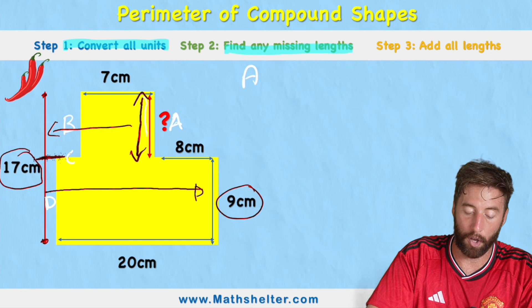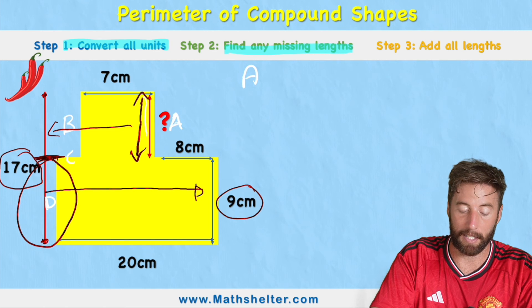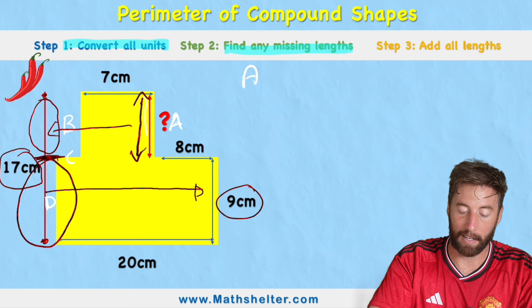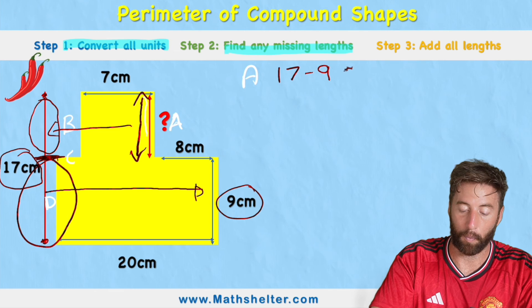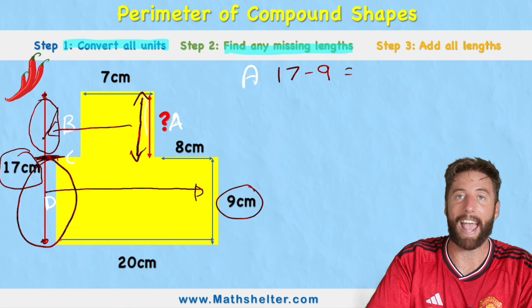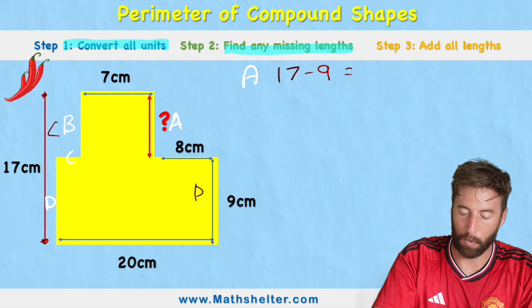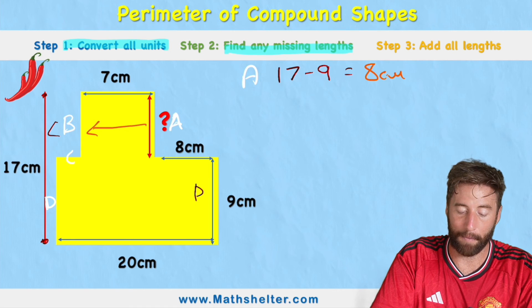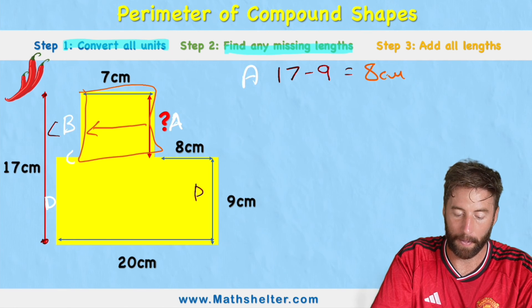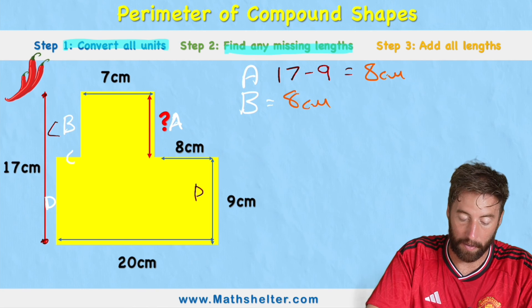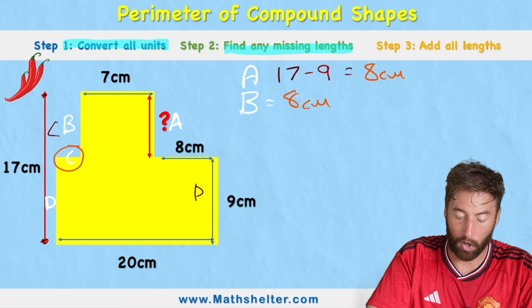Let's tackle A first. Looking at the total height of the shape — 17 centimeters — and next to it we have 9 centimeters already known. So 17 subtract 9 equals 8, meaning A equals 8 centimeters. Since there's a square at the top, the opposite side B must also equal 8 centimeters.